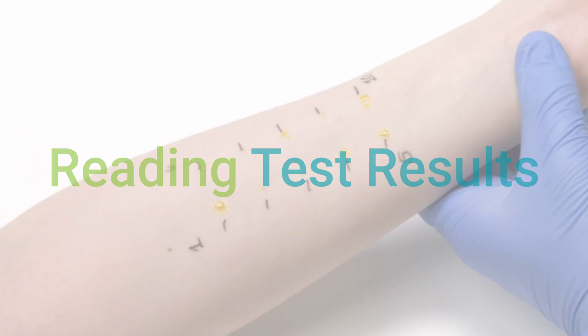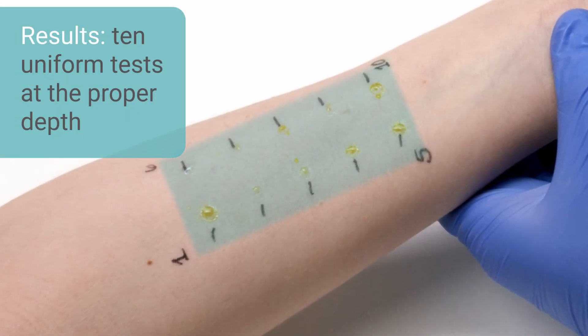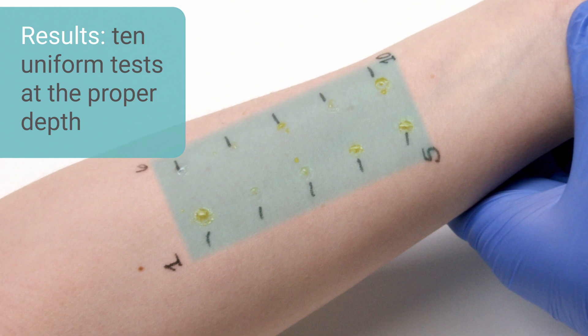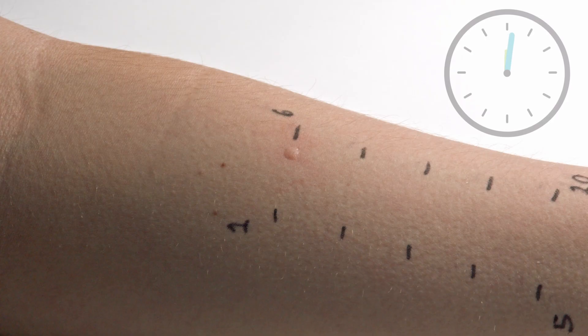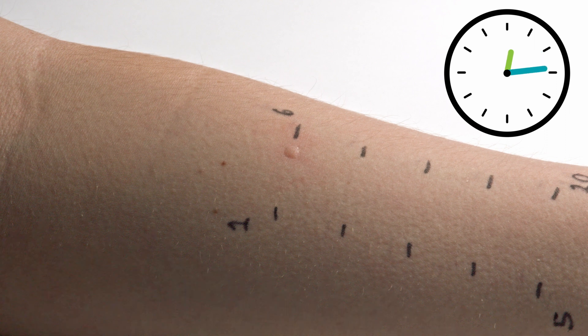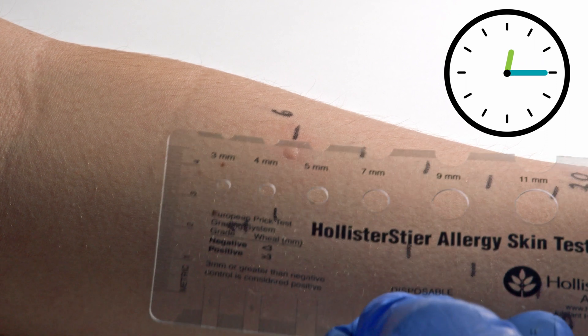When used as described, the Comforten device will produce 10 uniform skin tests, each at the proper depth. Within 10 minutes, the histamine positive control can be read, and at 15 minutes, the allergens are ready to be evaluated.